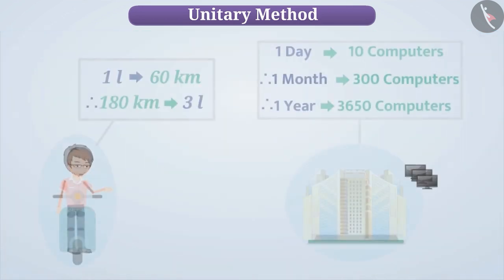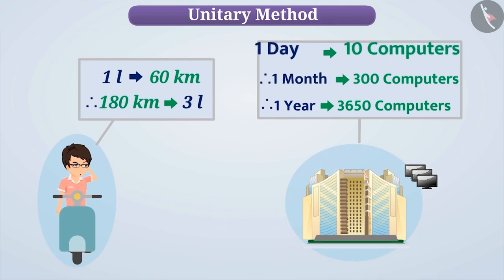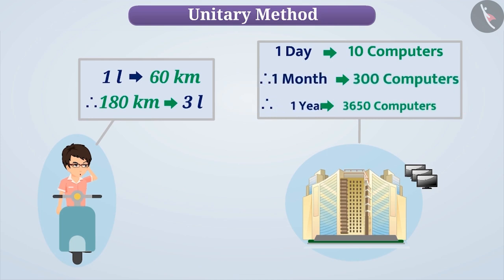Similarly, for the following situations also, you will use the Unitary Method. Drivers find out the mileage of their vehicle based on distance travelled in 1 litre of petrol, and based on this, they find out the amount of petrol required to cover the desired distance. Depending on the number of units a company makes in 1 day, one can calculate the total number of its produce in a month or a year.